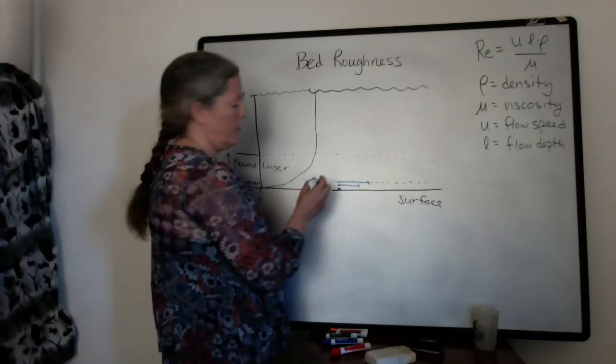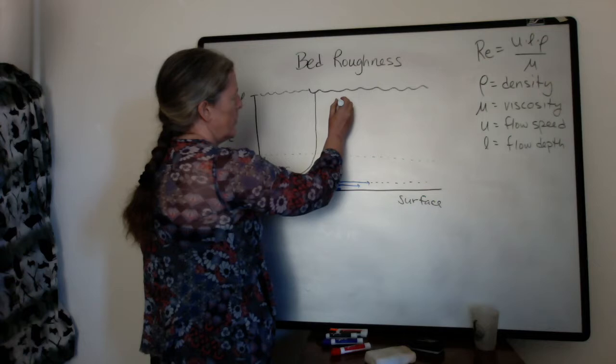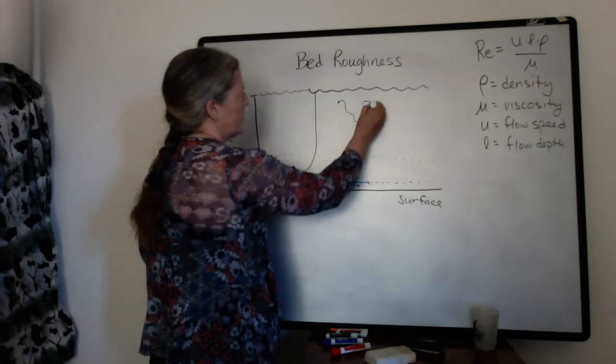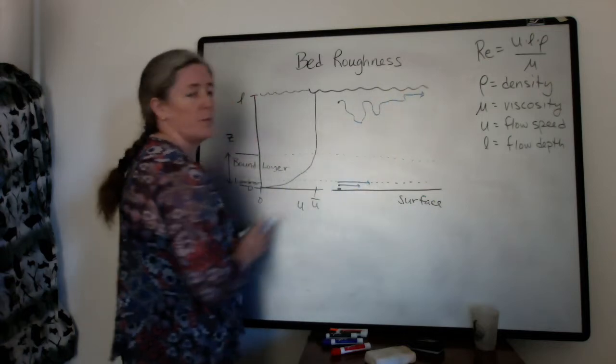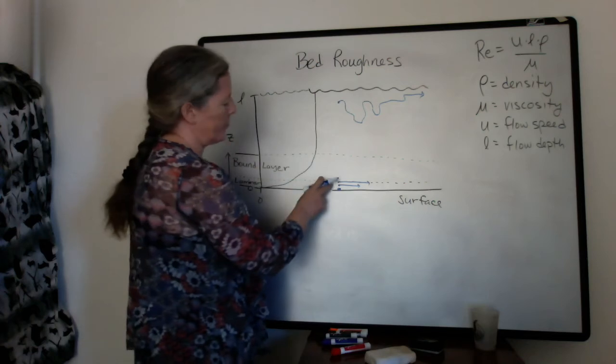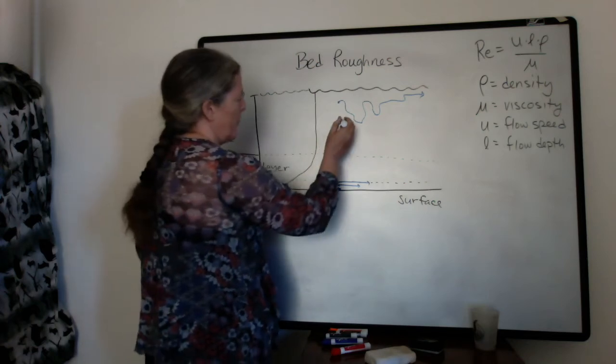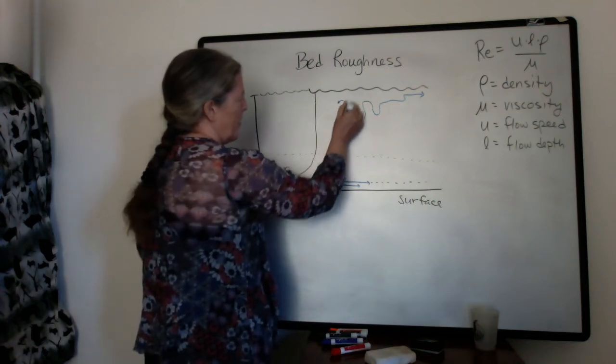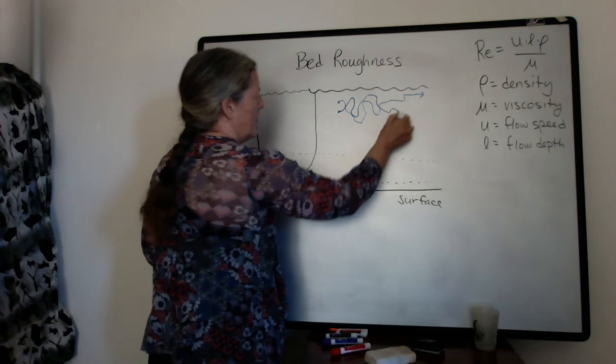If we go up to the turbulent area, we can trace molecules and they'll move much further downstream on average than the ones at the bottom of the flow, but they also get mixed around.